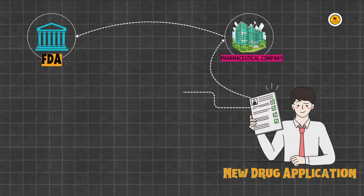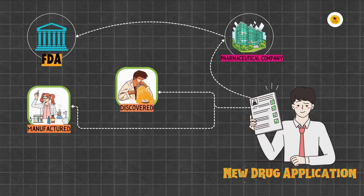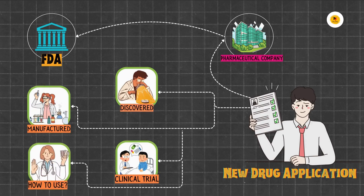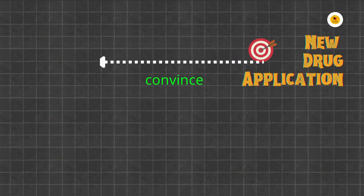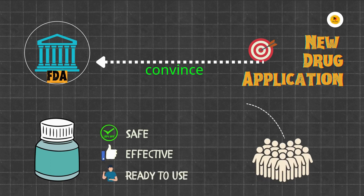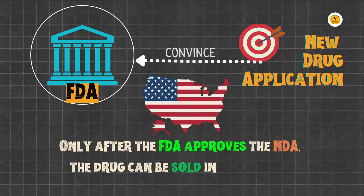The New Drug Application covers everything about a drug, starting from how it was discovered, manufactured, tested during clinical trials, and how it should be used. The goal of the NDA is to convince the FDA that the drug is safe, effective, and ready to be used by patients in the United States. Only after the FDA approves the NDA can the drug be sold in the market.